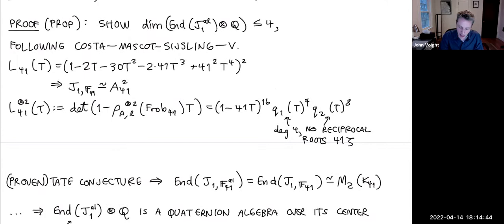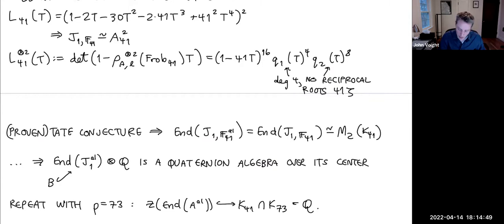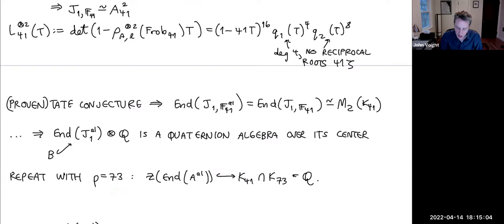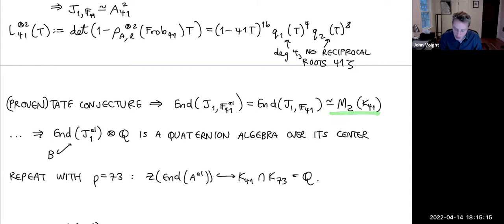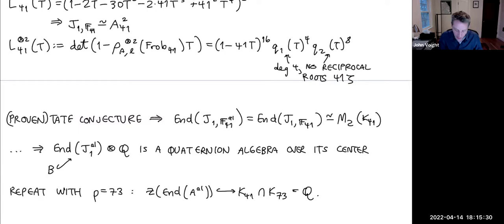The dimension 16 comes from a degree-4 field (4² = 16). To get the bound of 4 on the characteristic-zero endomorphisms, we use bookkeeping from our algorithm. We then conclude they must be a quaternion algebra over its center. To compute the center, we repeat with p = 73: the endomorphisms are all defined over F_{73}, and the field k_{73} has no intersection with k_{41}, so the center can only be Q.